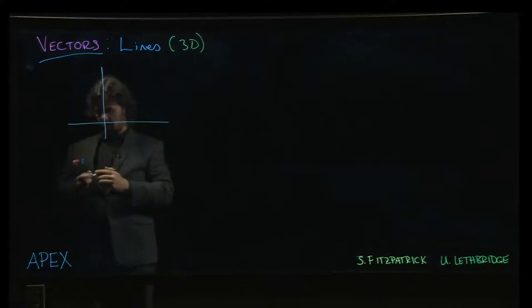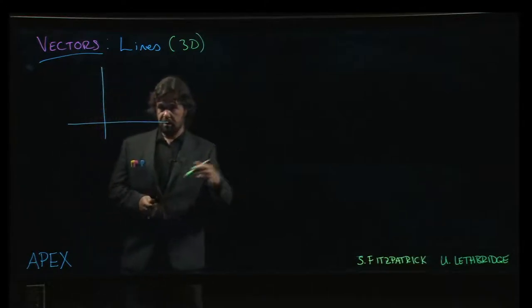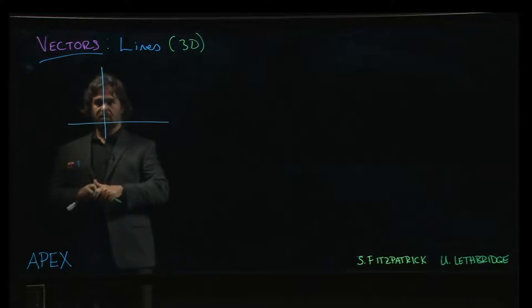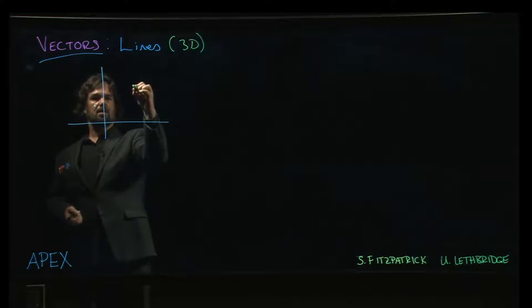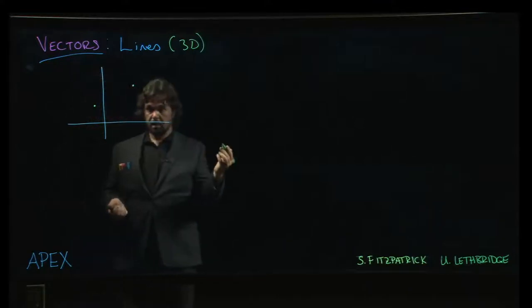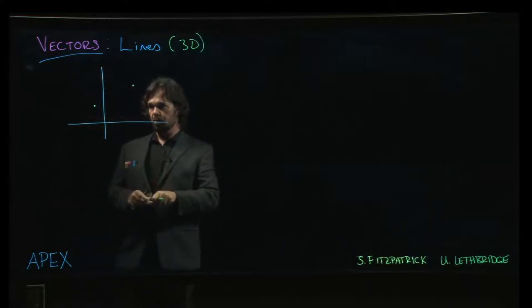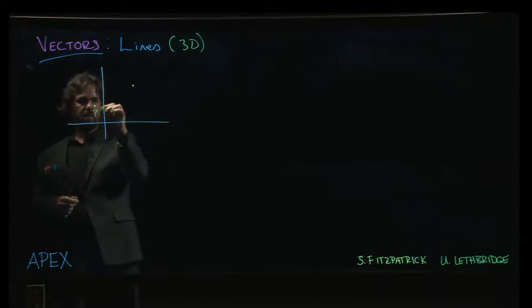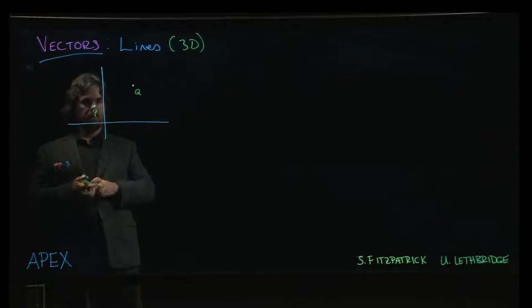We know how that works. There are lots of ways to think about defining a line: slope-intercept, point-slope, or using two points. So we know that in the plane, one way to think about defining a line is two points P and Q, and you can connect the dots and you get a line.